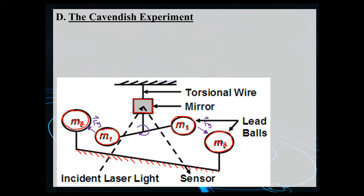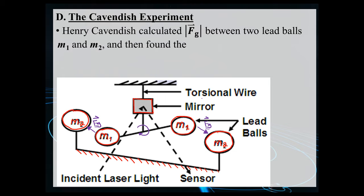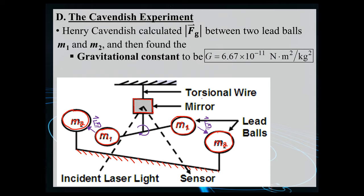For the Physics 20 level, we don't need to know the mathematical details beyond knowing the apparatus, how it moves, and what important constant we get out of it. Cavendish calculated the magnitude of the gravitational force between the two lead balls M1 and M2, and using information about the torsional constant of the wire and how light reflects off the mirror, he obtained the gravitational constant — 6.67 times 10 to the negative 11 newtons times meters squared per kilogram squared. That's the significance of the experiment.